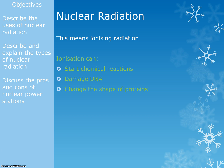We've talked about ions before. Now for the higher, you need to know that ionisation can start chemical reactions, it can damage DNA — so the idea that radiation can give you cancer is linked to it damaging your DNA — and it can also change the shape of proteins.